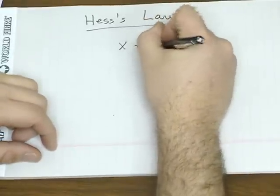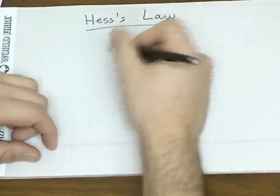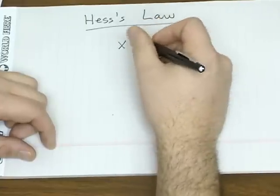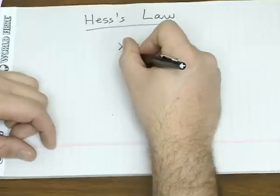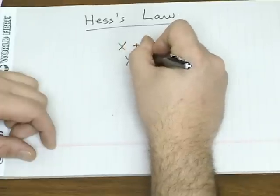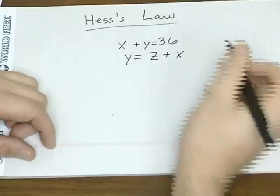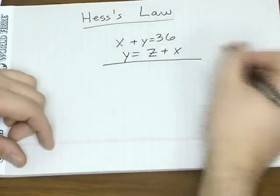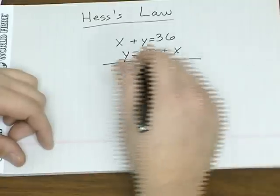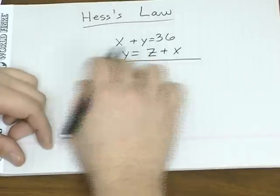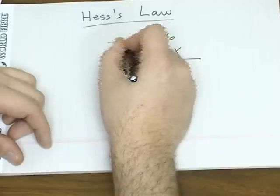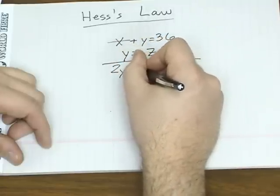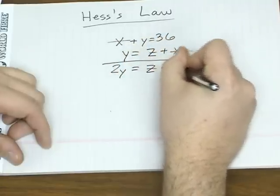Say for example you've got X plus Y equals 36 and you've got another equation, Y equals Z plus X. Early on in algebra you were taught how to add equations together. In this case you see the X's are on opposite sides so they drop out, so when you add them together you get 2Y equals Z plus 36.